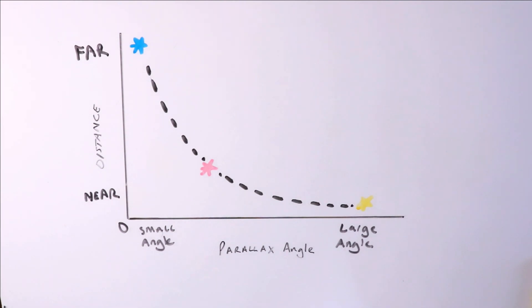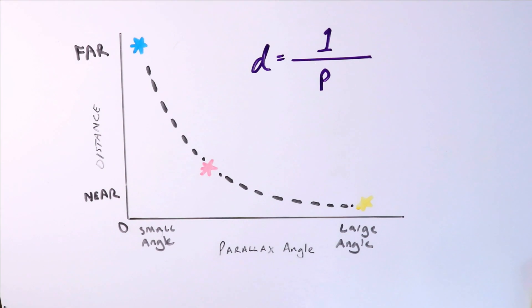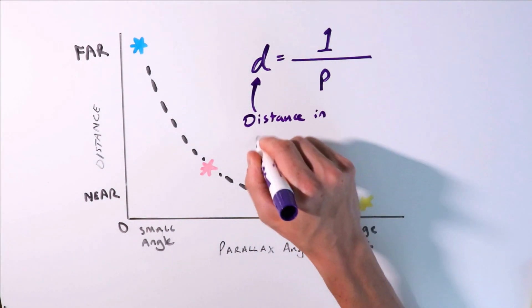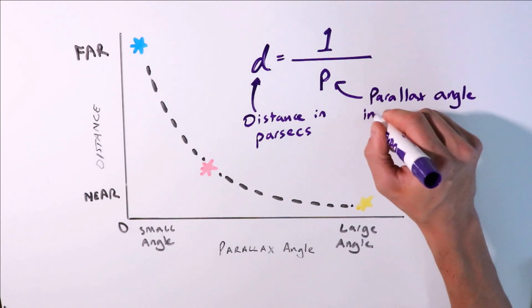This relationship is mathematically described with this formula: d equals 1 divided by p, in which d is the distance in parsecs, and p is the parallax angle measured in arcseconds.